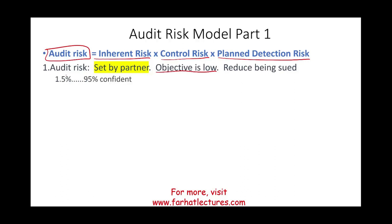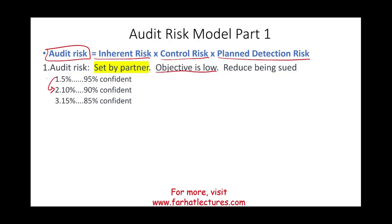If I set the audit risk at 5%, it means I want to be 95% confident. If I set the audit risk at 10%, it means I want to be only 90% confident. If I set it at 15%, I want to be 85% confident. If I set my risk at 0%, it means I want to be 100% confident — meaning I want to audit everything, though that's an extreme case.